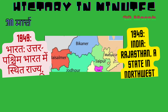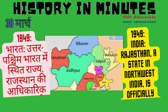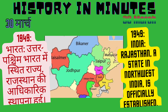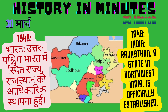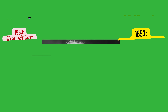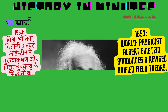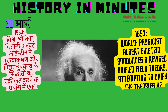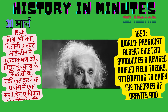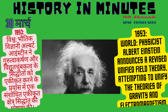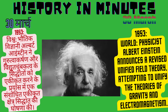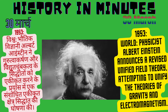1949: India — Rajasthan, a state in northwest India, is officially established. (Hindi: Uttarpashchim Bharat mein sthit rajya, Rajasthan ki adhikarik sthaapna hui.) 1913: World — Physicist Albert Einstein announces a revised Unified Field Theory, attempting to unify the theories of Gravity and Electromagnetism. (Hindi: Bhaatik vidyaani Albert Einstein ne gurutvakarshan aur vidyutchumbaktva ke siddhanton ko ekikrit karne ke prayas mein ek sanshodhit ekikrit kshetra siddhant ki ghoshna ki.)